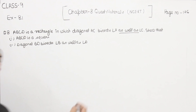Angle number 1 is equal to angle number 2. Why? Because angle 1 is equal to angle 3, and angle 3 is equal to angle 2, because AC is bisecting angle A as well as angle C. So angle 1 is equal to angle 2. Now we are going to take triangle ACD. In this triangle, CD is equal to AD — the side opposite to equal angles are equal.